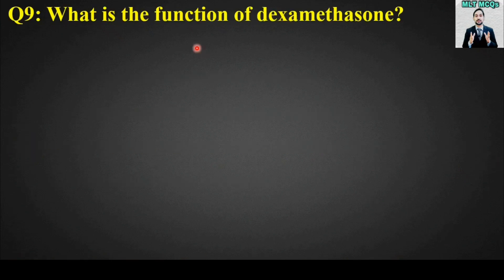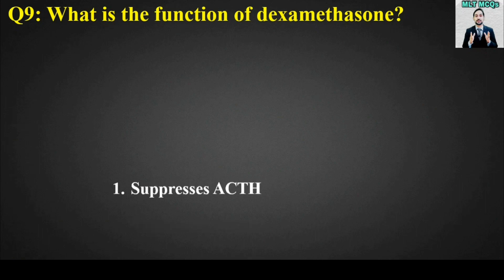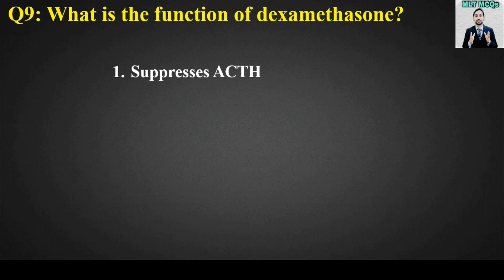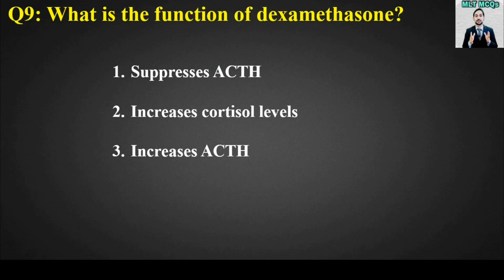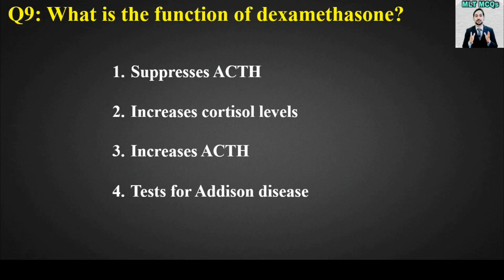MCQ number 9: What is the function of dexamethasone? Options are: suppresses ACTH, increases cortisol levels, increases ACTH, or tests for Addison disease. The right answer is option number 1. The function of dexamethasone is to suppress ACTH, also called adrenocorticotropic hormone.